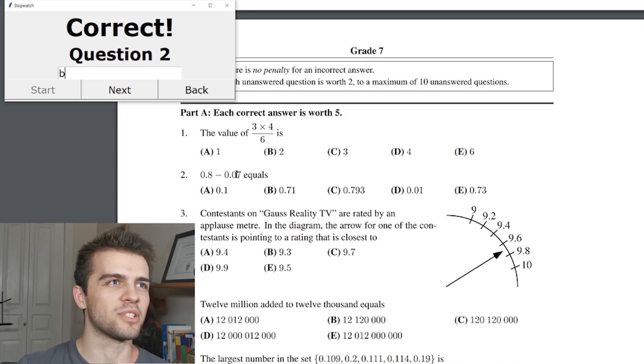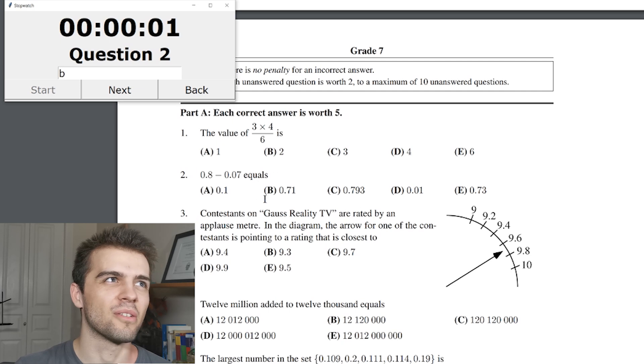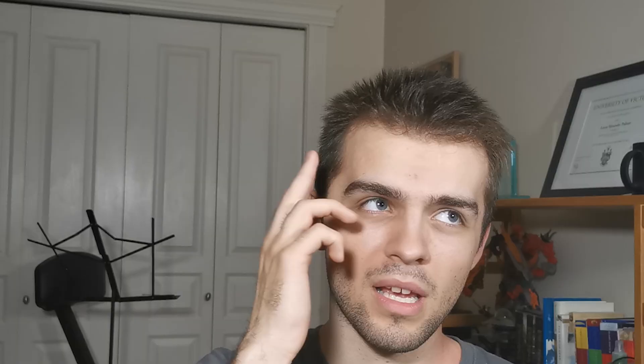0.8 minus 0.07. Now this is one of these annoying questions where you think maybe it's 0.8 minus 0.7, right? If you're a kid in grade 7 and you're going through this quick. But no, I'm a big brain here and I know that this is 0.73. These are tough questions, guys. This is a math contest.